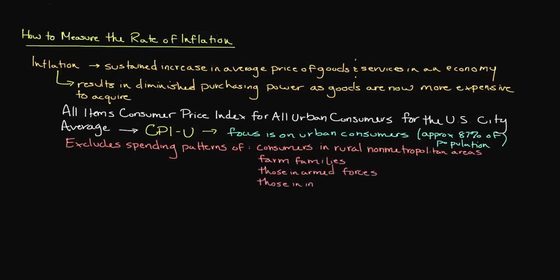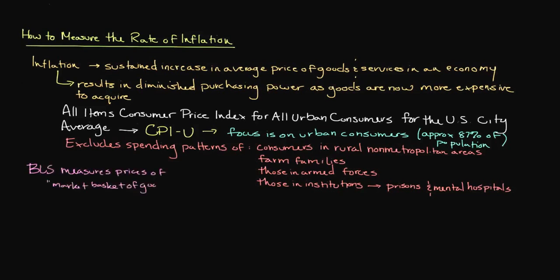In order to create the CPIU, data collectors at the Bureau of Labor Statistics must determine the prices of a wide range of goods and services, commonly referred to as a market basket of goods. This market basket of goods is designed to reflect the items that a typical family purchases in order to achieve some type of minimum standard of living.